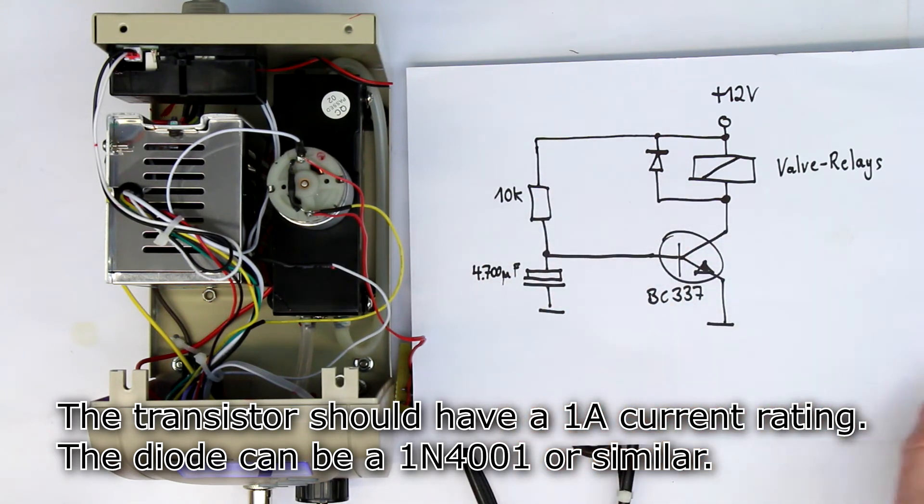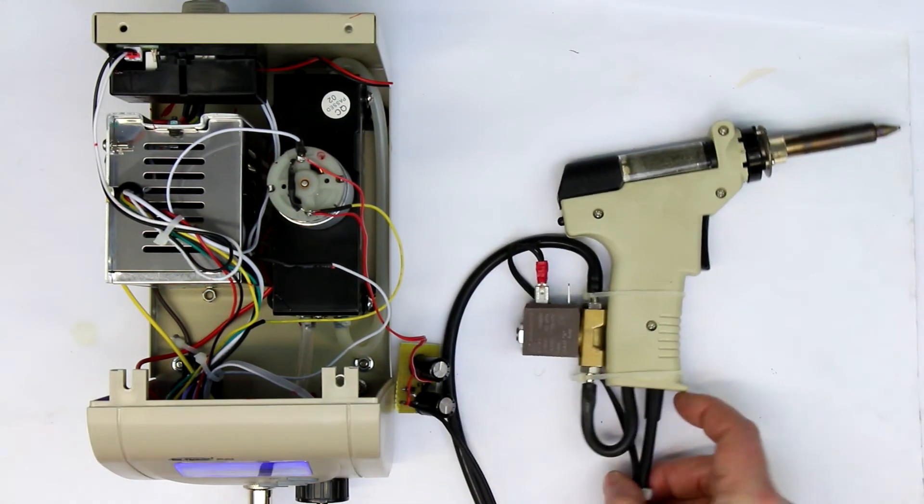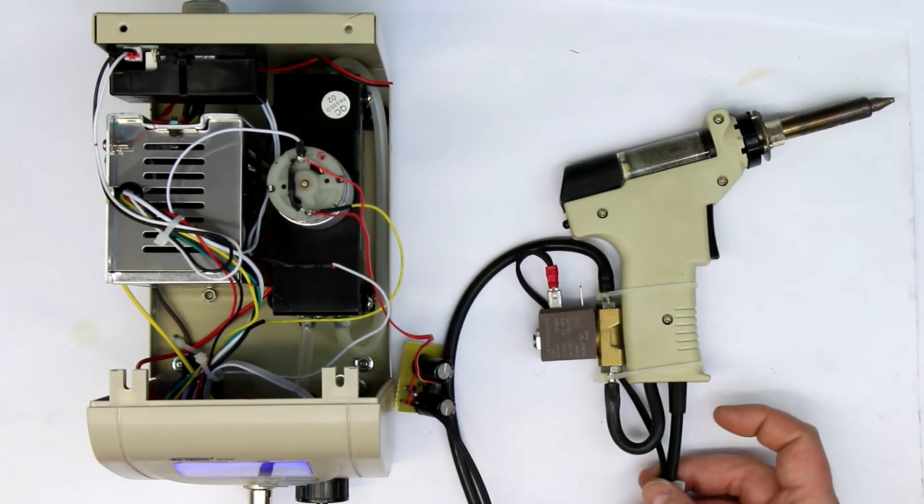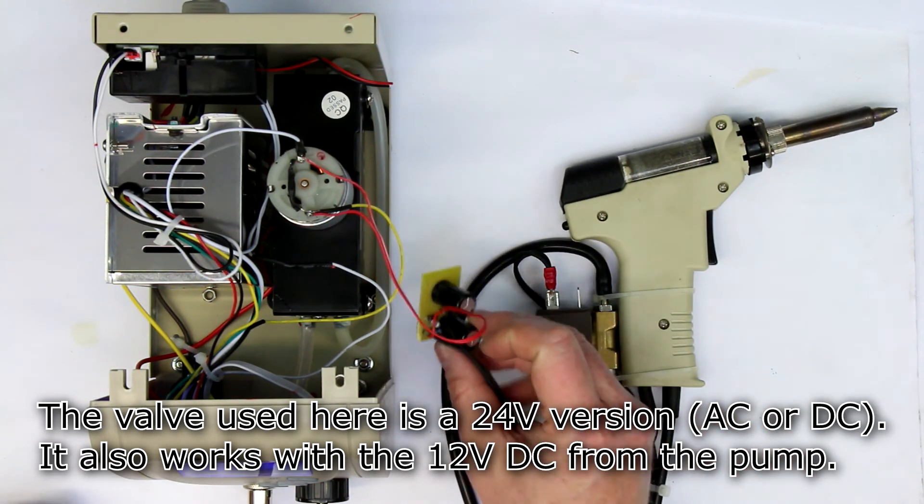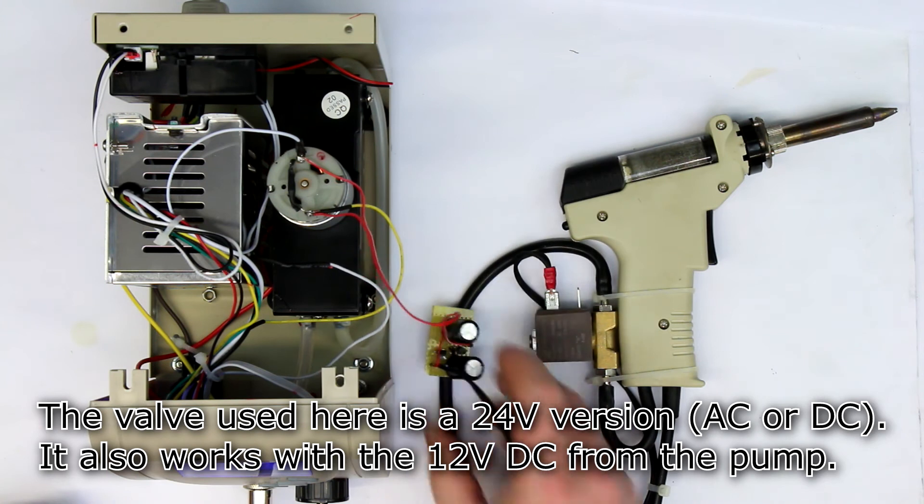So you need all in all one, two, three, four components and an extra cable, of course, from the vacuum valve back to the vacuum station. And so that's all.